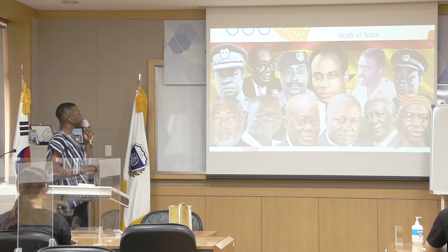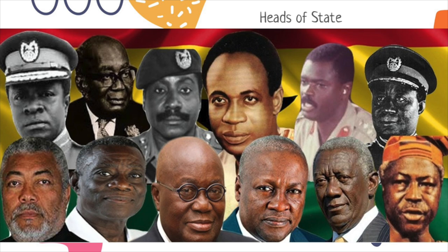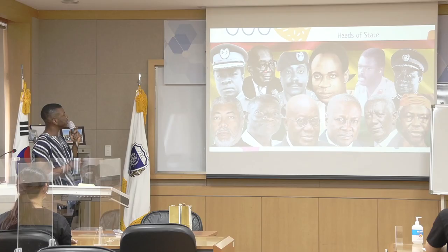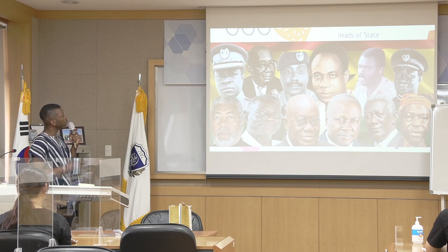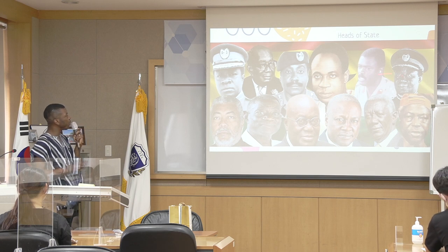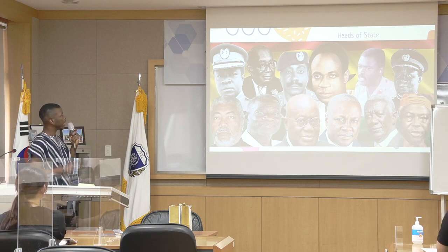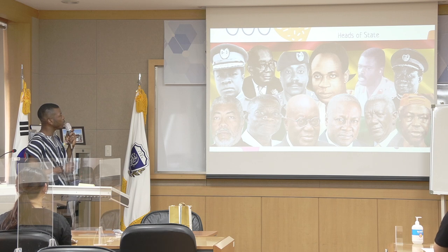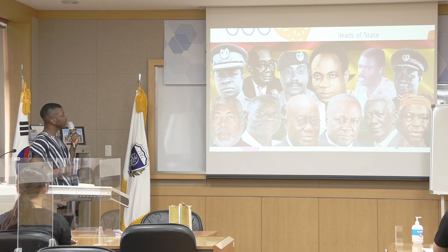Moving on to heads of state: our current president is Nana Akufo-Addo. Let me name them: President Ankrah, Edward Akufo-Addo (the father of the current president), Frederick Akuffo, Dr. Kwame Nkrumah, General Afrifa, and General Acheampong. We have Flight Lieutenant Jerry John Rawlings, Professor John Evans Atta Mills, John Kufuor, John Dramani Mahama, and John Agyekum Kufuor. So in Ghana, if you want to be president, it's very common to bear the name John.